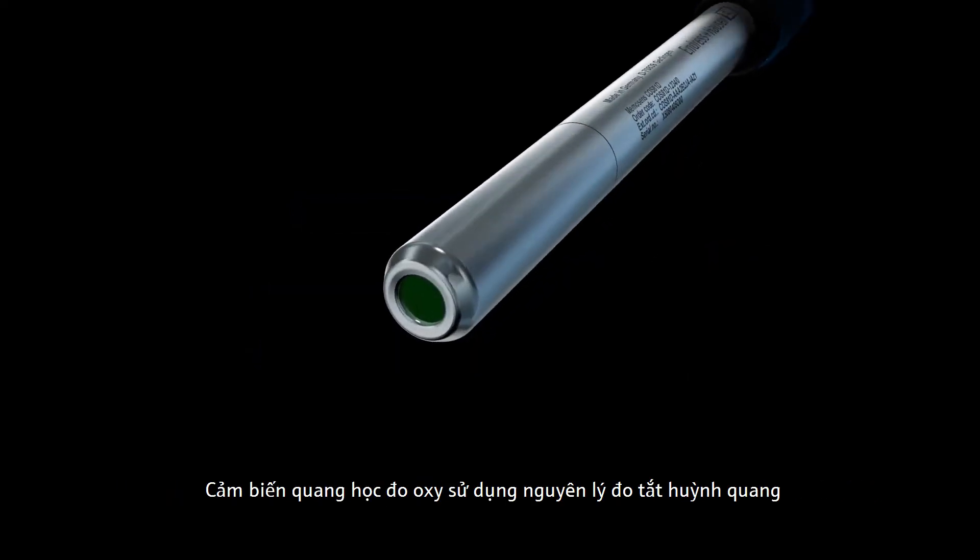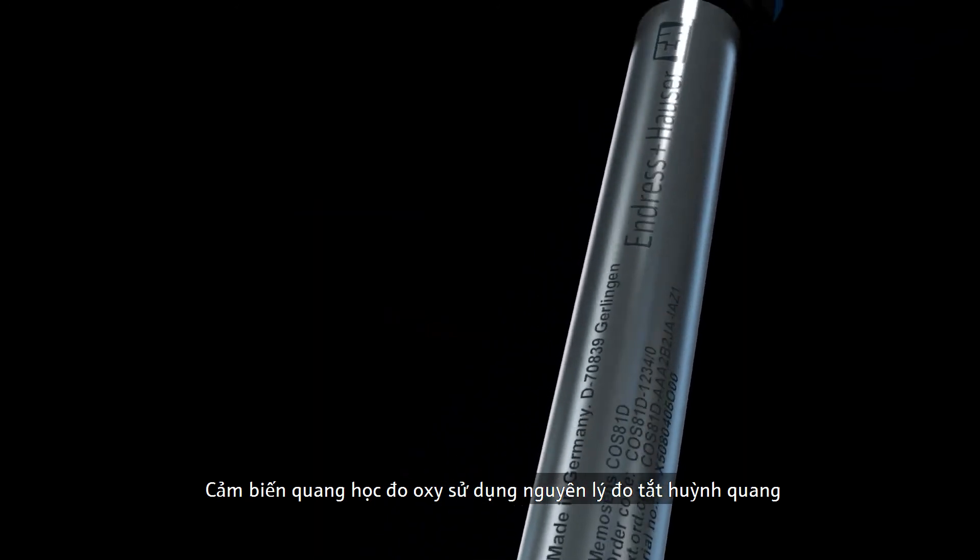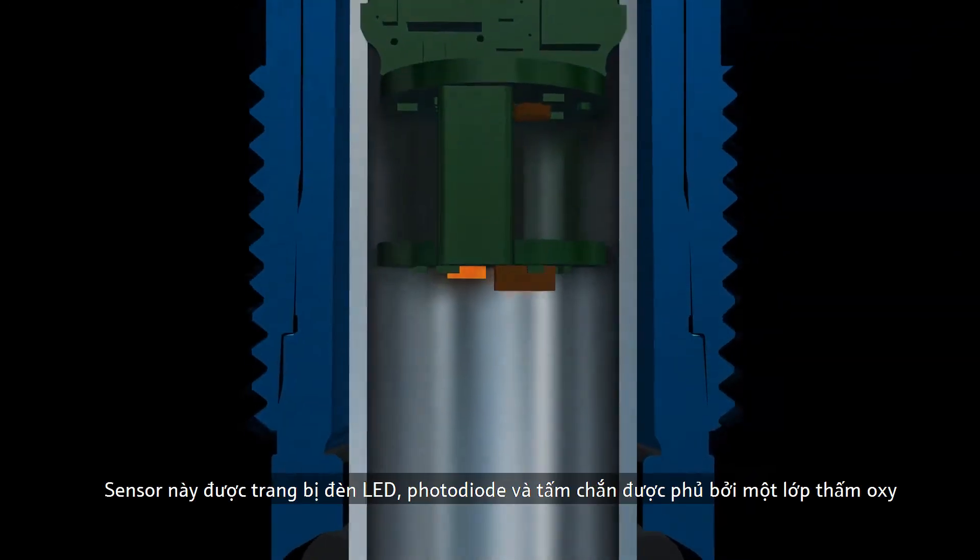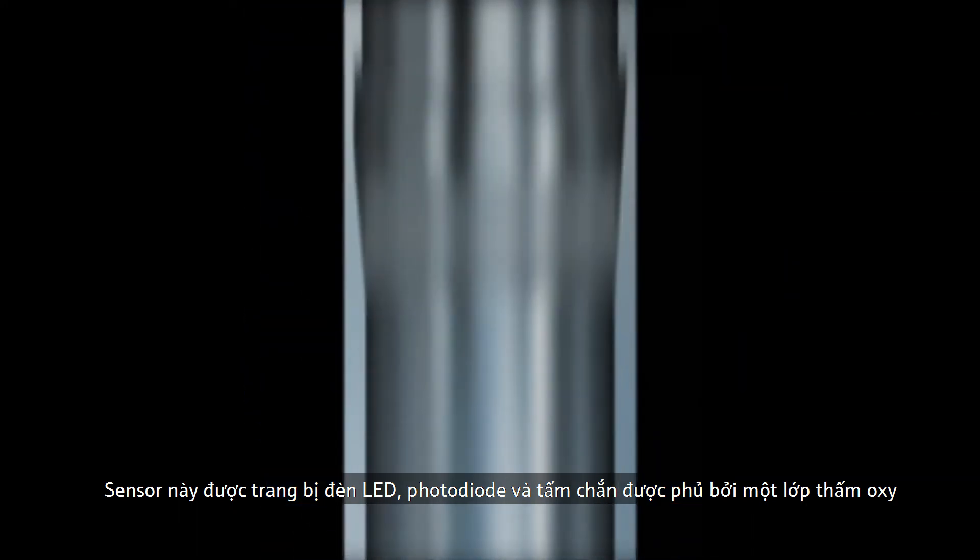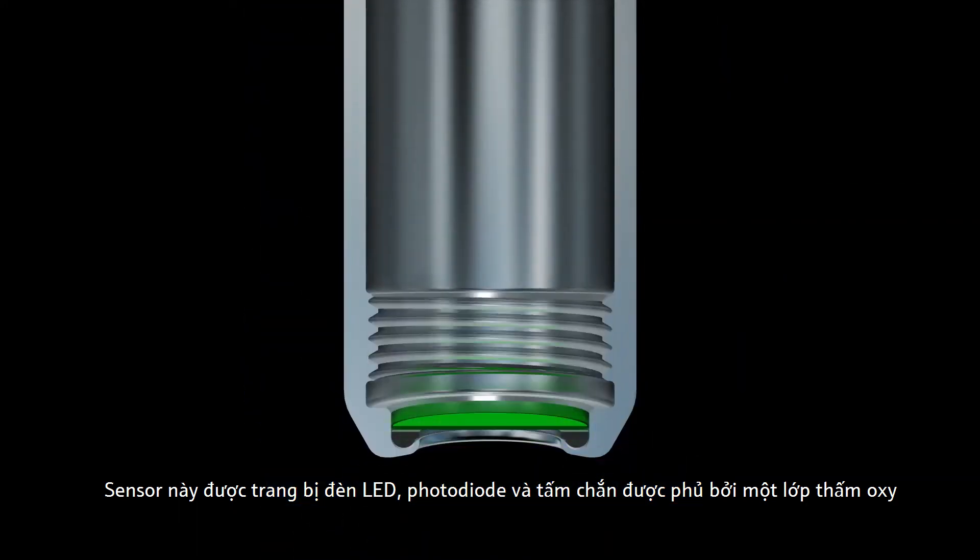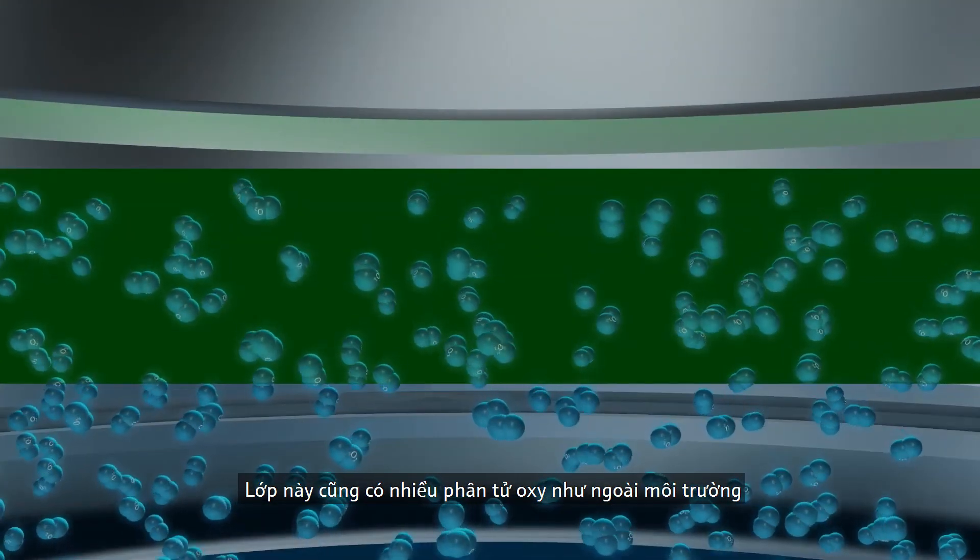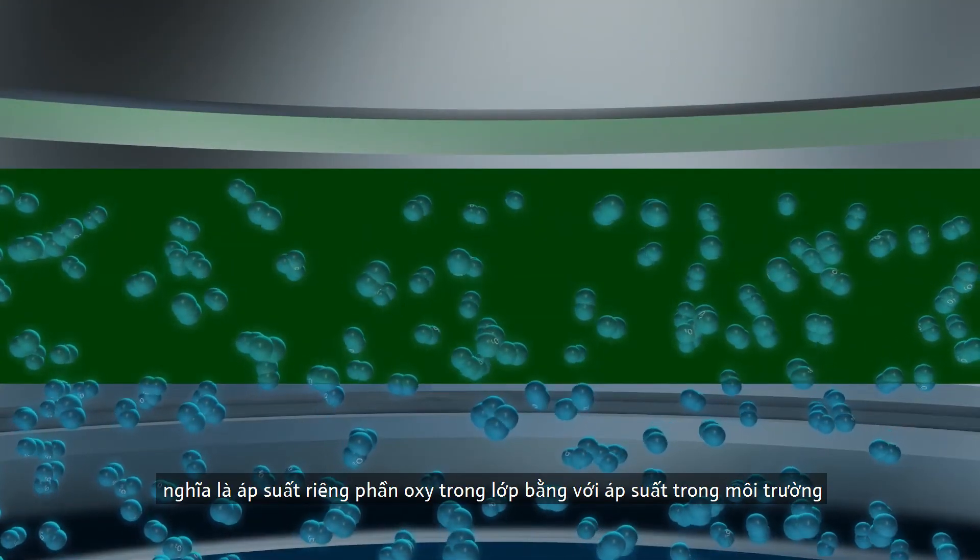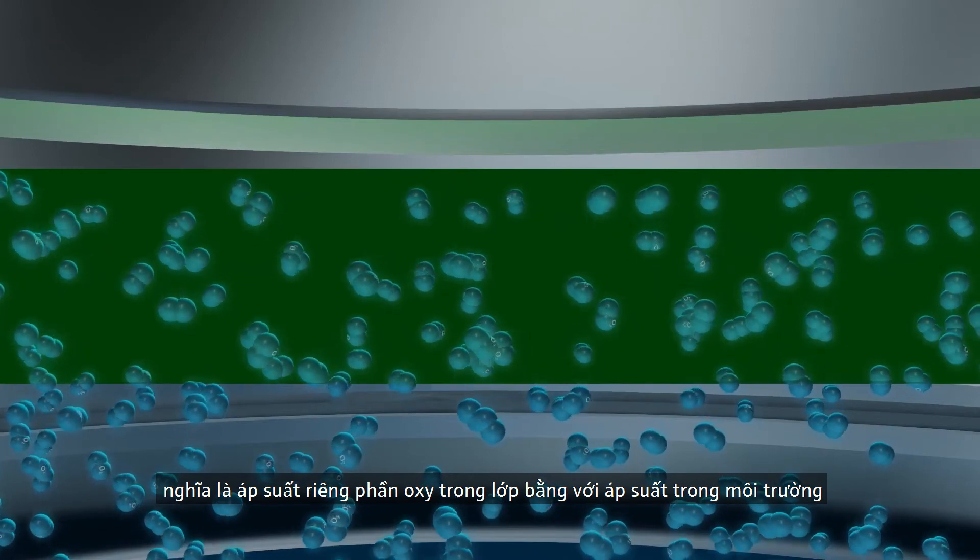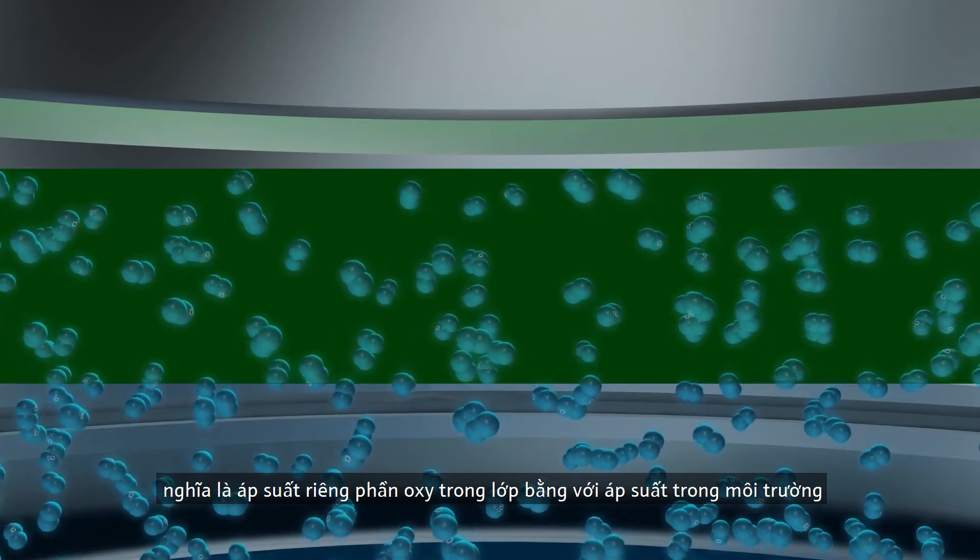The optical oxygen sensor uses the fluorescence quenching measuring principle. This sensor is equipped with an LED, a photodiode, and a separating section that is covered by an oxygen-permeable layer. In this layer there are as many oxygen molecules as in the medium. This means the partial oxygen pressure in the layer is equal to the pressure in the medium.